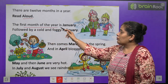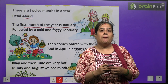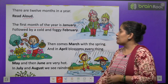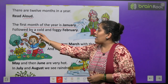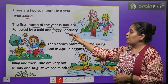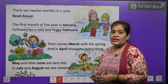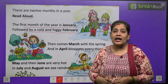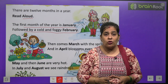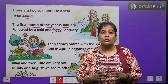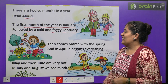The first month of the year is January. Saal ka pehla mahina kaun sa hota hai, bachon? January. Followed by a cold and foggy February. Aur second kaun sa hota hai? February. Usmein kya hota hai? Bahut zyada fog hota hai, dhund hoti hai aur bahut thanda hota hai.